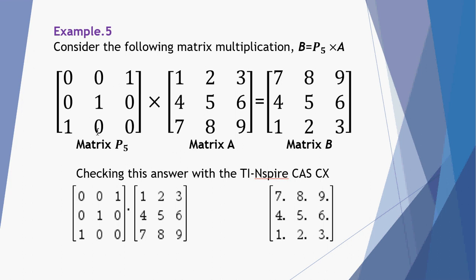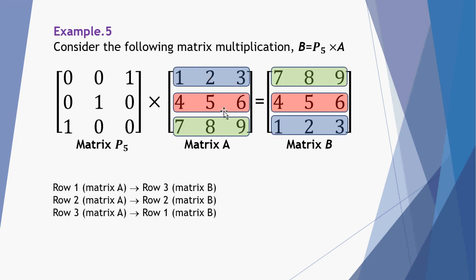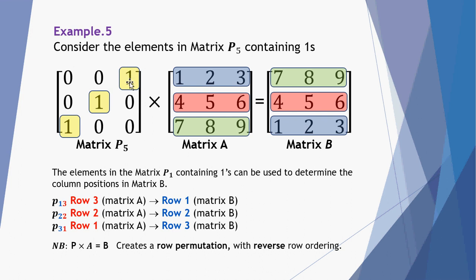A final example: a different permutation matrix on the left-hand side, so again a row permutation. The first row has become the third in matrix B. The second row remains the second in matrix B. And the third in matrix A becomes the first in matrix B. Reading right to left: P13 tells me row 3 becomes row 1. P22 tells me row 2 stays at row 2. And P31 tells me row 1 in matrix A becomes row 3 in matrix B.